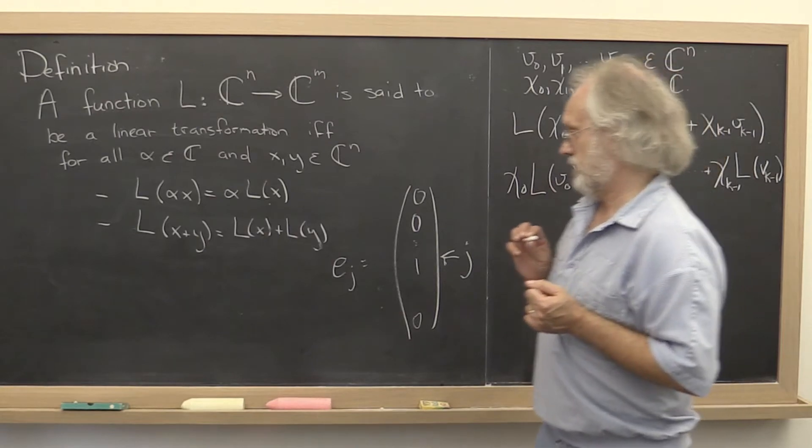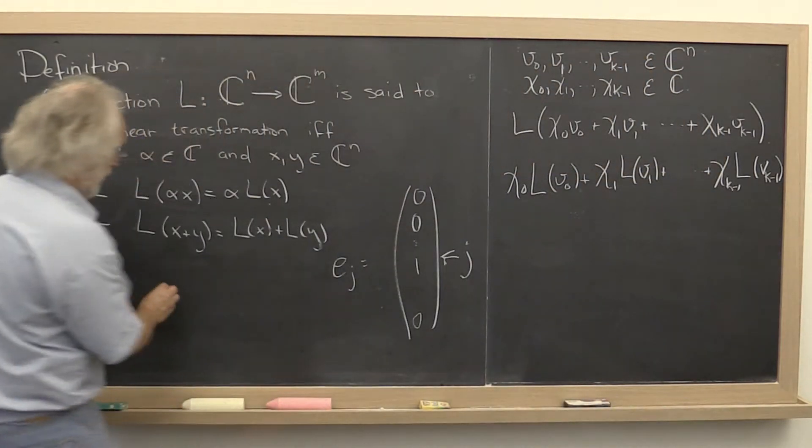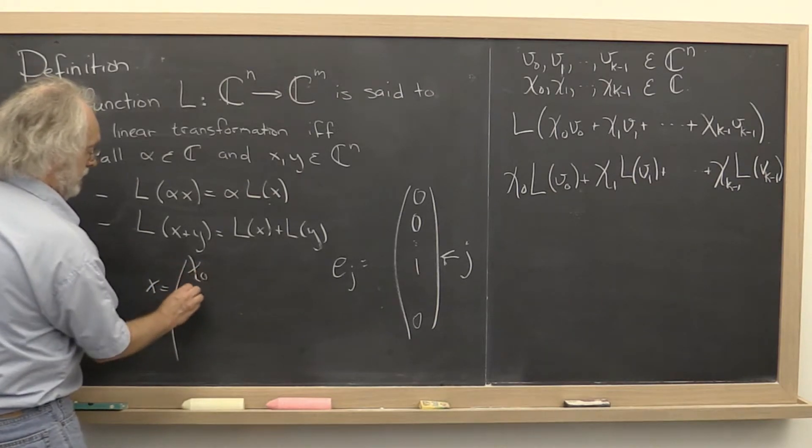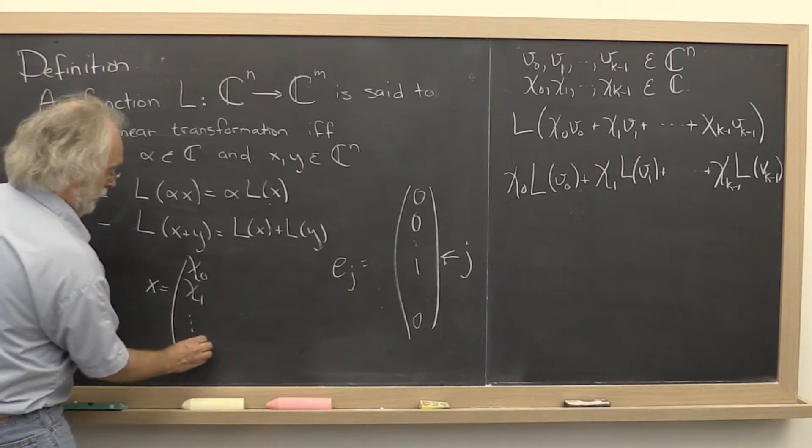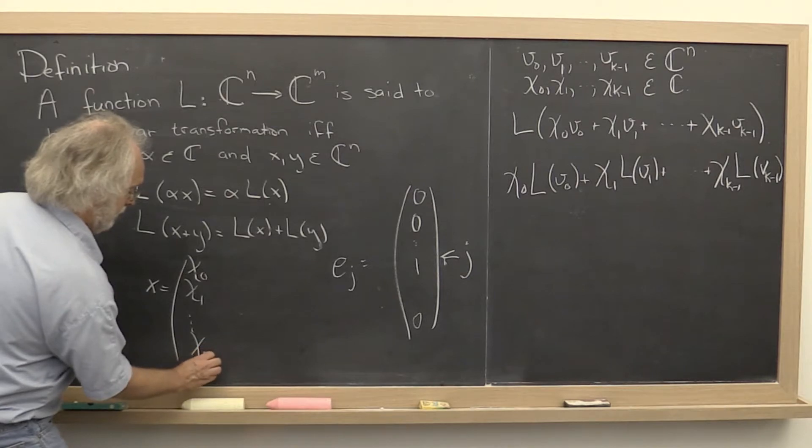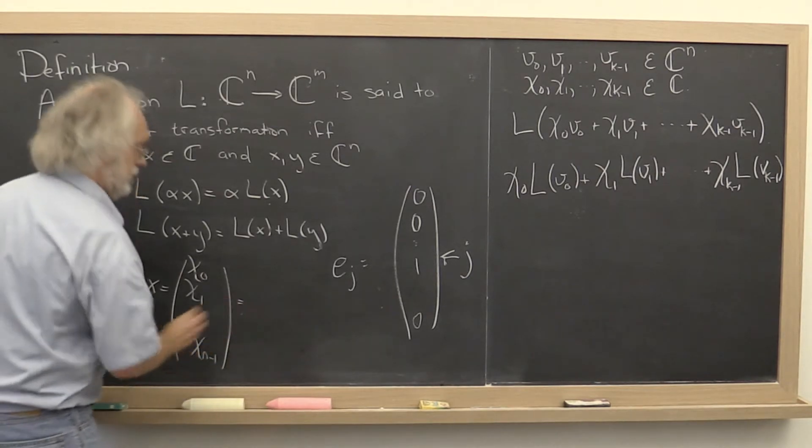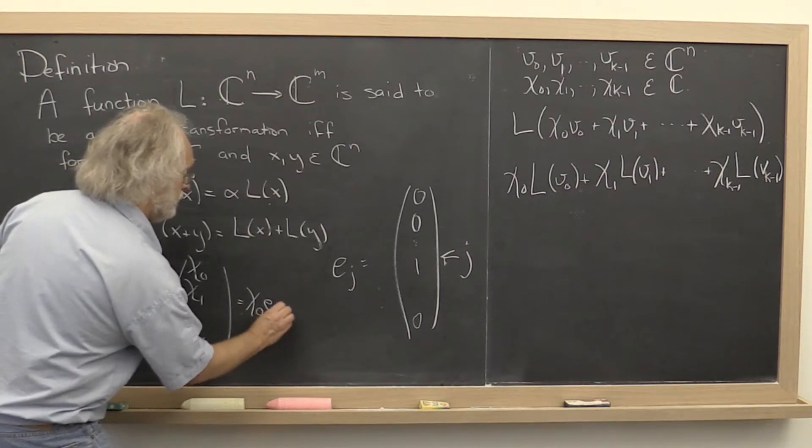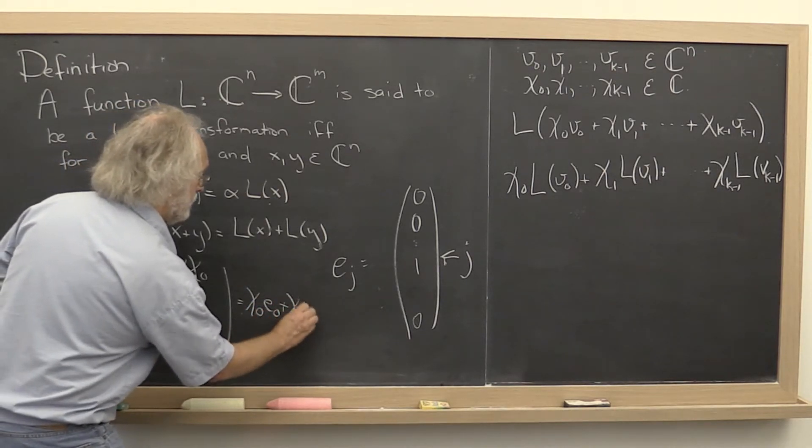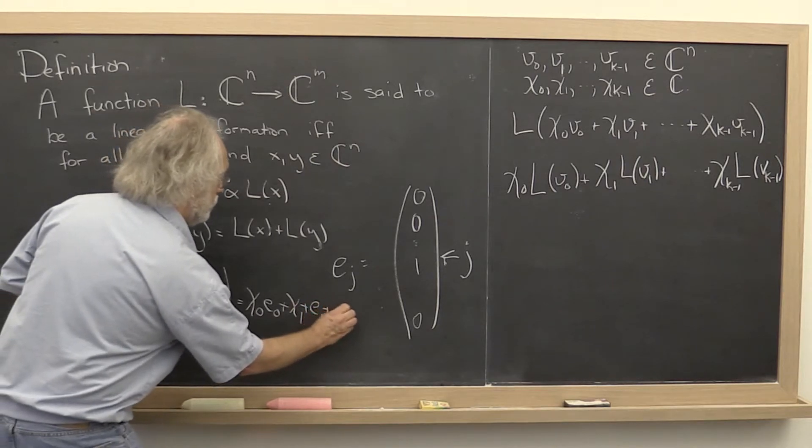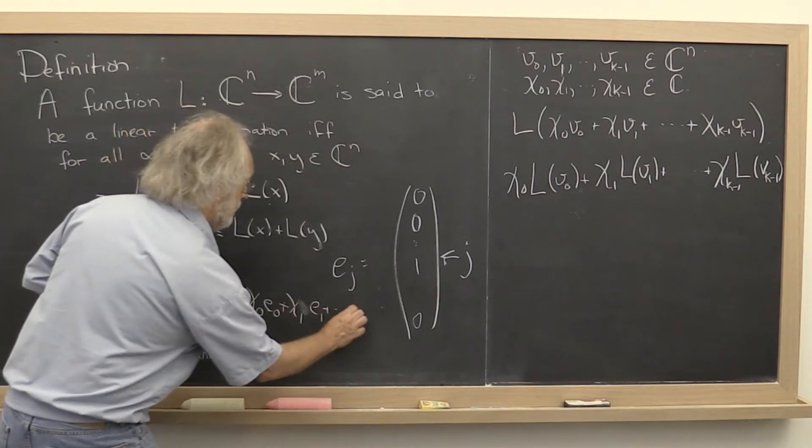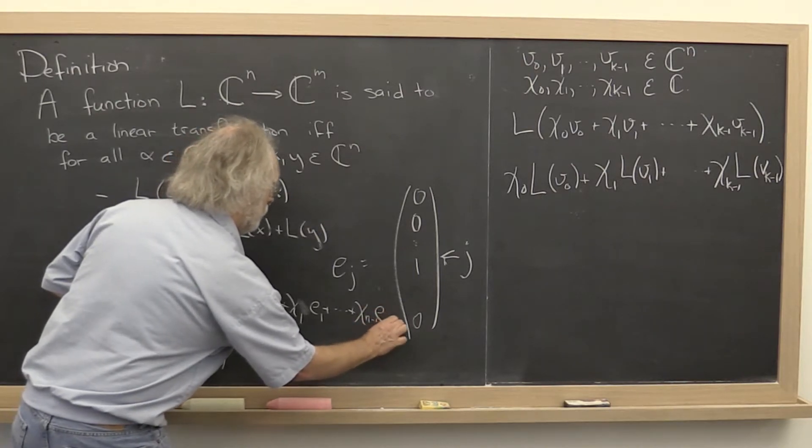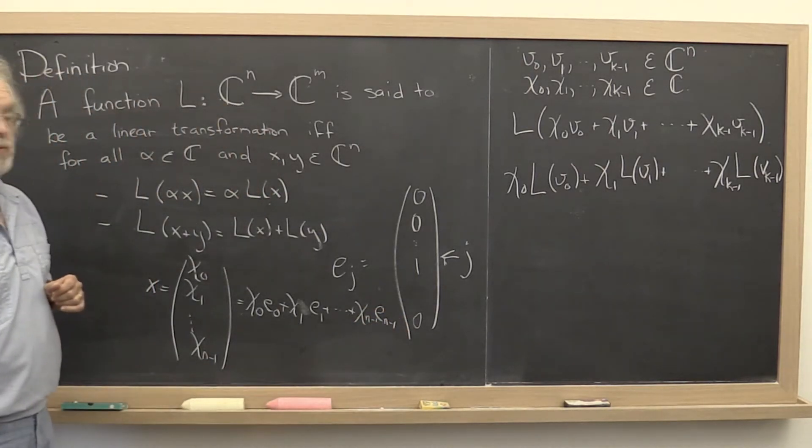Now, importantly, any vector x, if you expose its components, can be written as the linear combination of the standard basis vectors. That's pretty obvious.